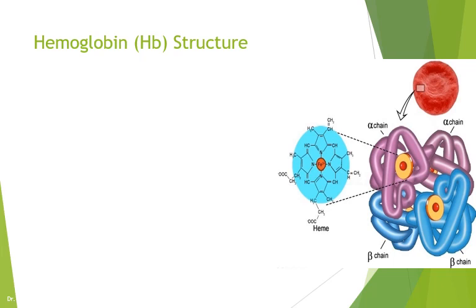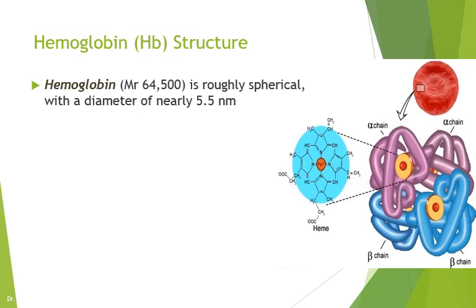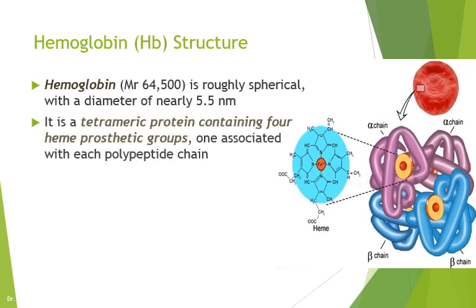Before we move further to discuss thalassemia as a genetic disorder, we should know something about hemoglobin. Hemoglobin is the central molecule in red blood cells which carries oxygen from the lungs to the tissues. It is a roughly spherical molecule of molecular weight 64 kilodaltons with a diameter of around 5.5 nanometers. It is a tetrameric protein, meaning it contains four different subunits — it is a heterotetramer, meaning it contains two different types of subunits in its structure.